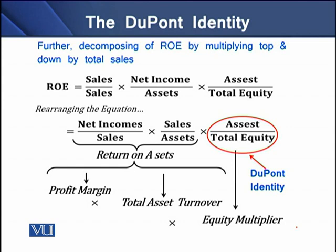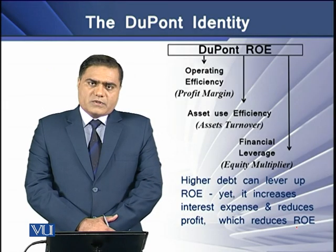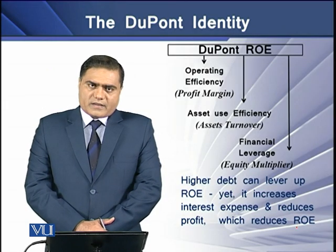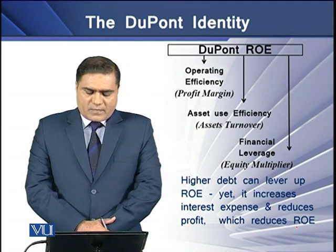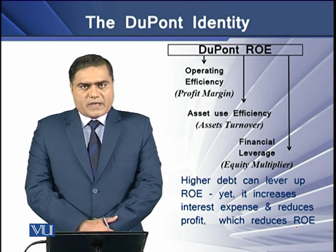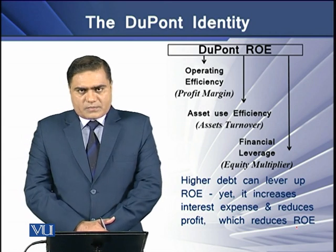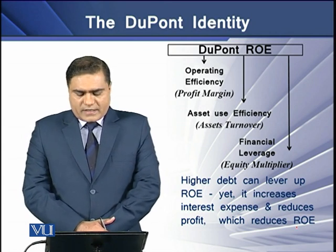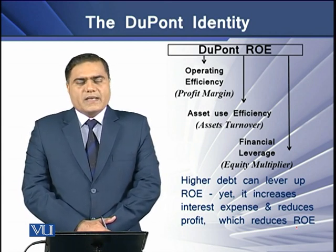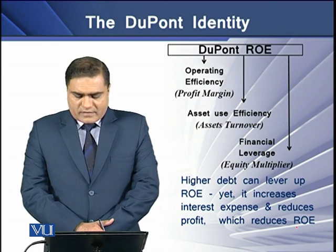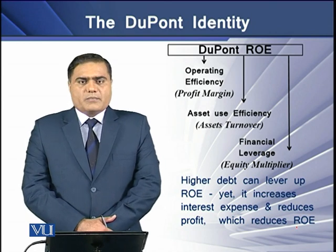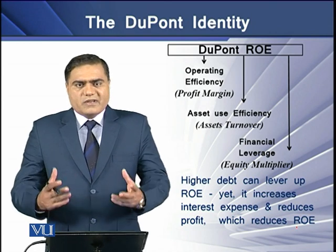If we increase profit margin and total assets turnover, our return on assets will increase. In the DuPont framework, profit margin represents operating efficiency, asset turnover ratio represents efficient use of assets, and the equity multiplier represents financial leverage.